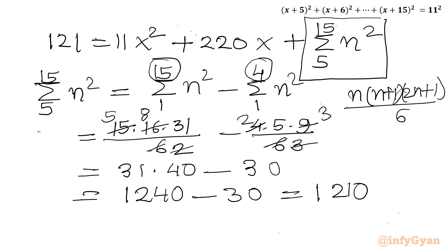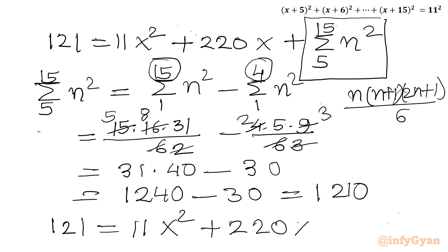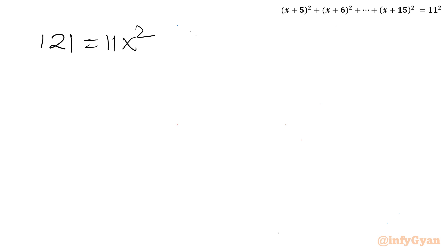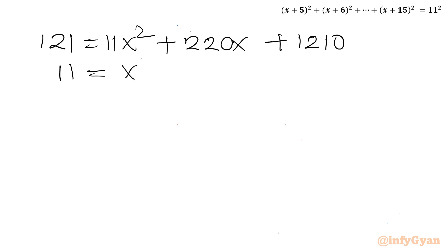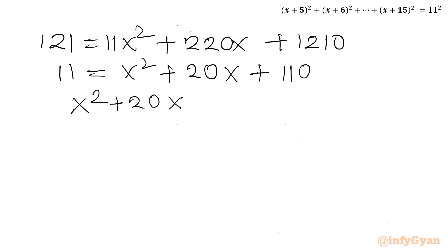Plugging back in: 121 = 11x² + 220x + 1210. The entire equation is divisible by 11, so dividing by 11 gives: 11 = x² + 20x + 110. Taking 11 to the RHS: x² + 20x + 99 = 0.